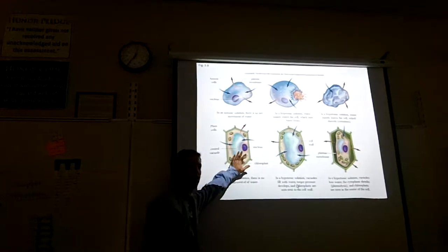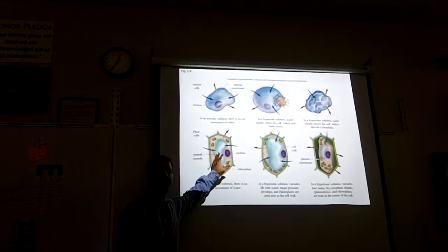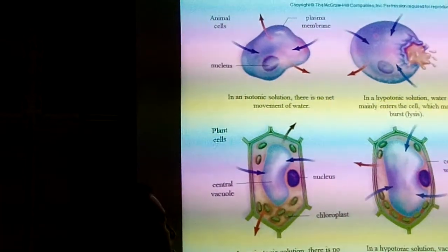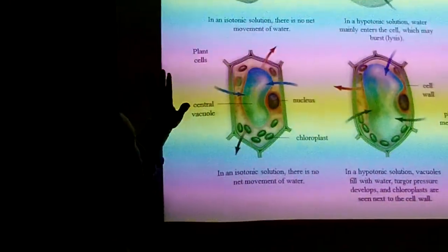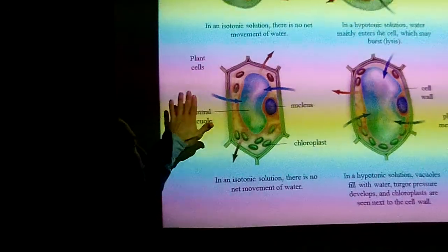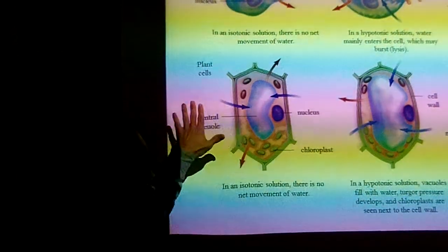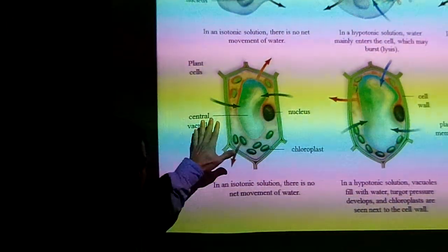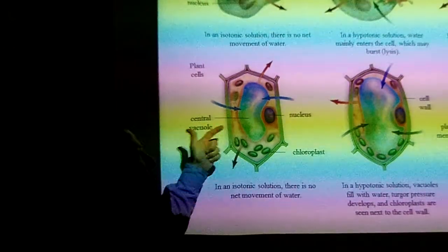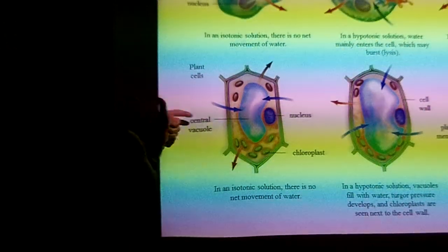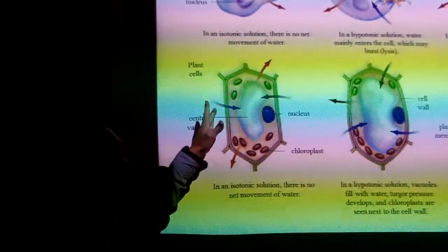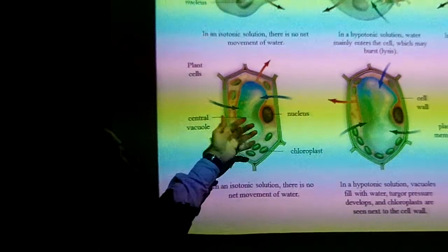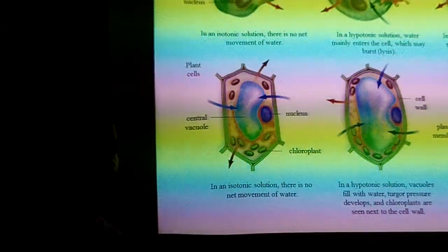Here is a situation where a cell is in an isotonic environment. Isotonic means there's the same amount of solute inside and outside the cell, so there's no net movement of water. Some water comes in, some goes out — it's about equal, so the cell doesn't expand or shrivel.